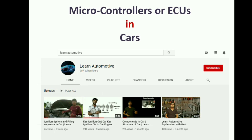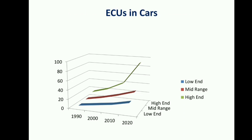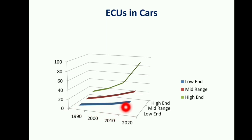So let's get back to this tutorial. ECU in cars — each car has a certain number of ECUs. For your understanding, I just wanted to share a rough survey that has been taken. If you see the years 1990, 2000, 2010, and 2020, you can have three categories: low end, mid range, and high end vehicles.